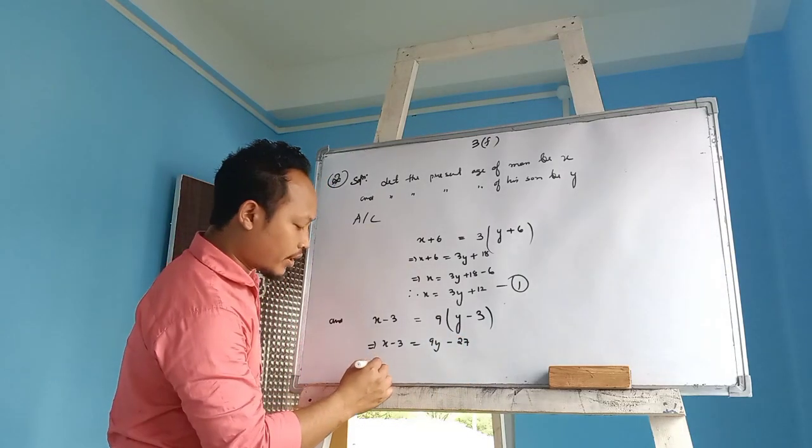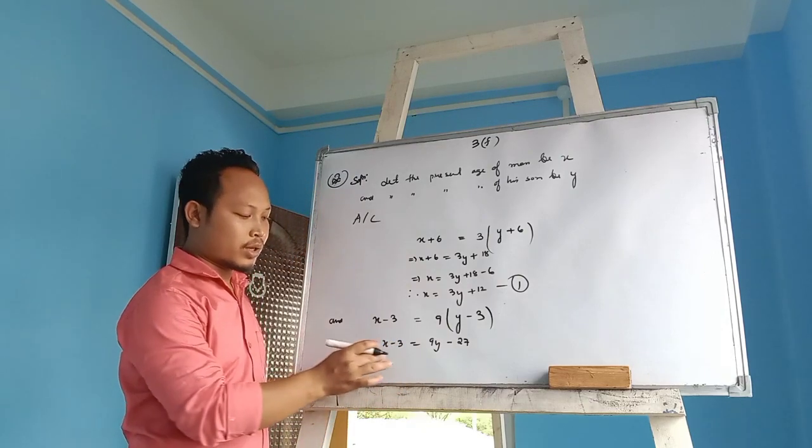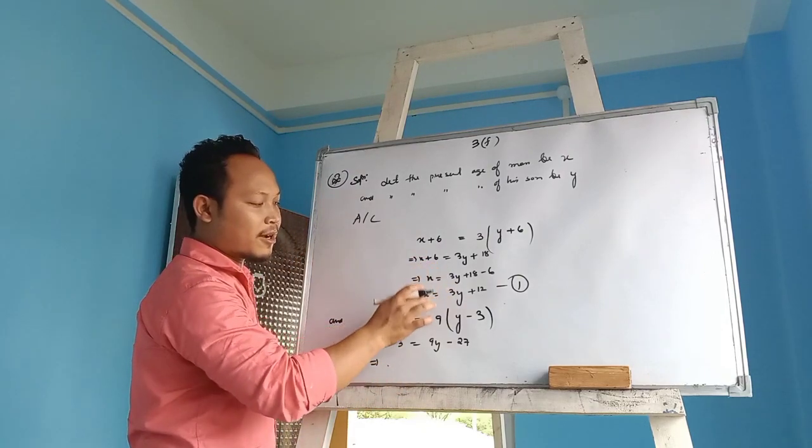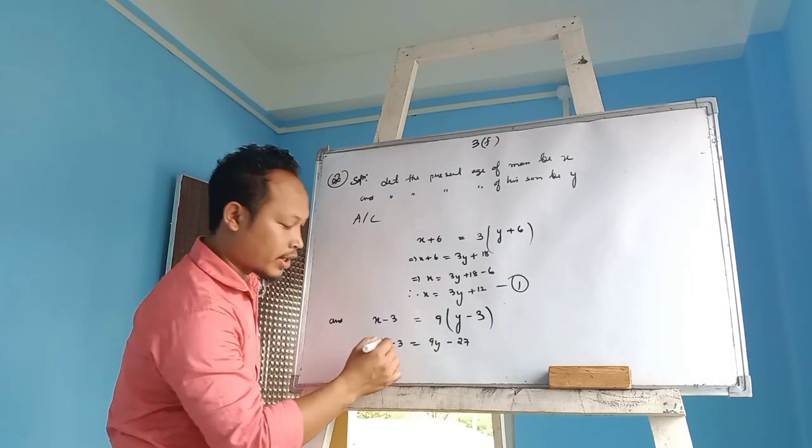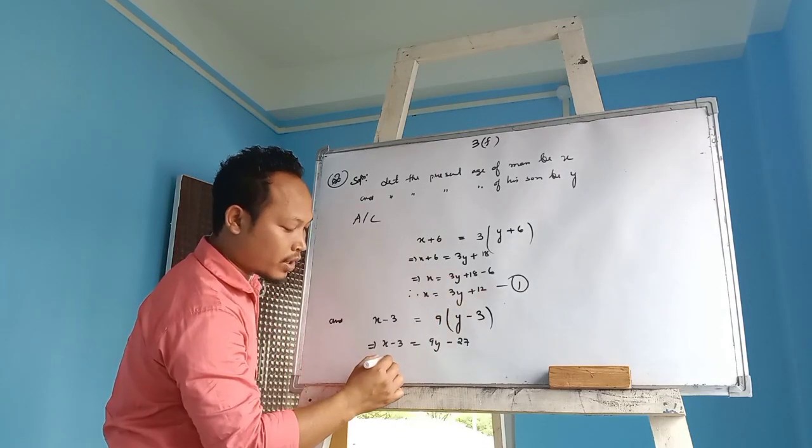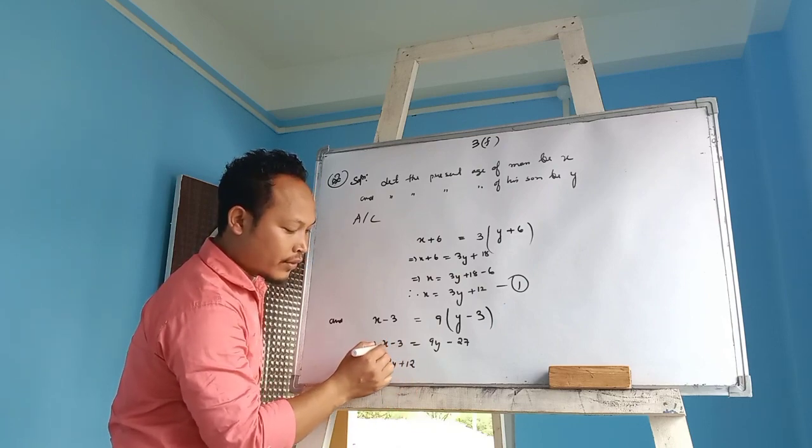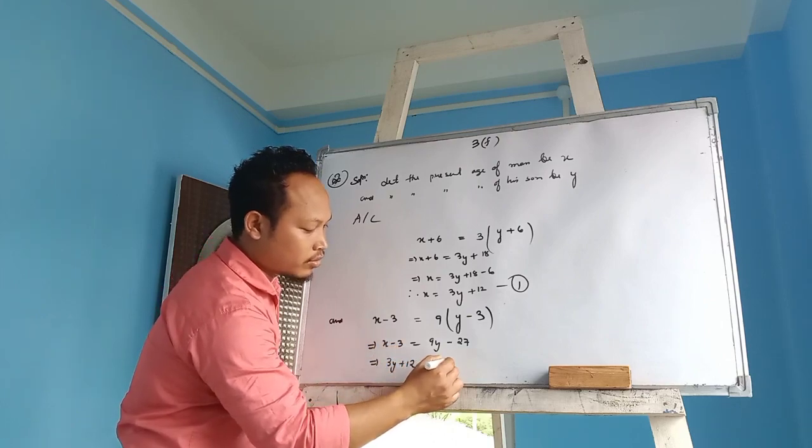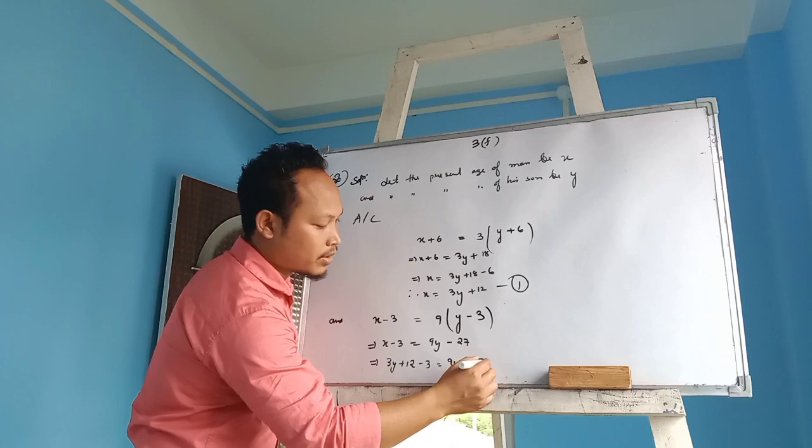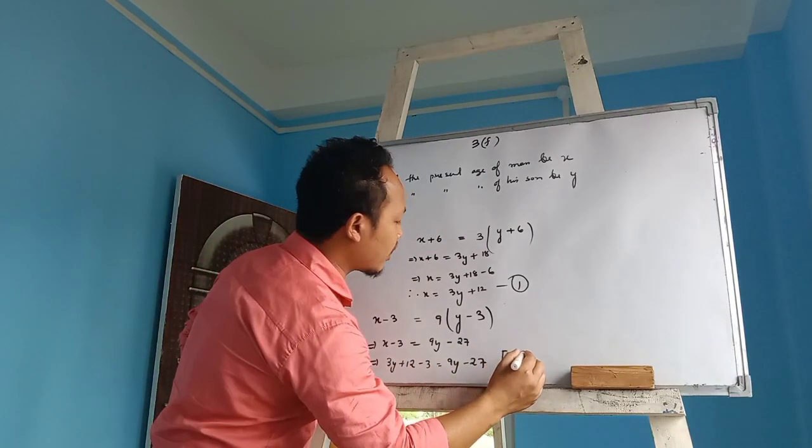So we can substitute x directly. In place of x I can put 3y plus 12. 3y plus 12 minus 3 is equal to 9y minus 27. Let us know. So here we can write...